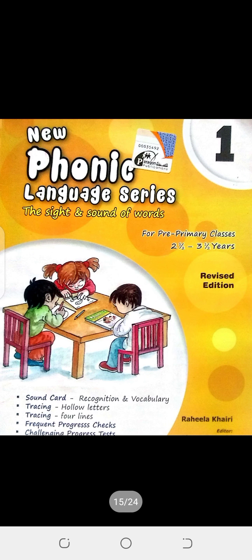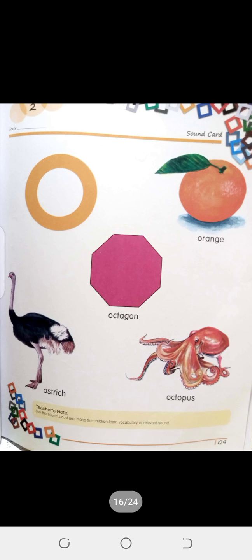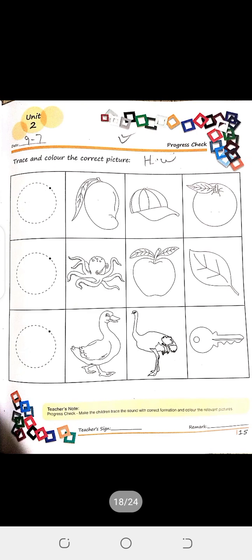Phonic language, page number 9: letter sound O. O is round and round — orange, octagon, ostrich, octopus. Circle the picture beginning with O — this is your class work. Our sound will be O: octopus, orange, ostrich, octagon. Trace and colour the correct picture. O is round and round and orange.